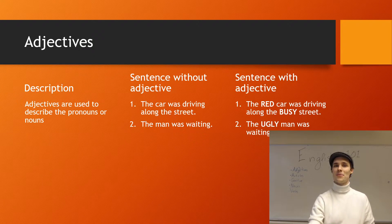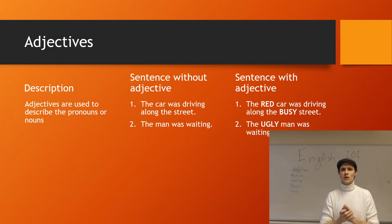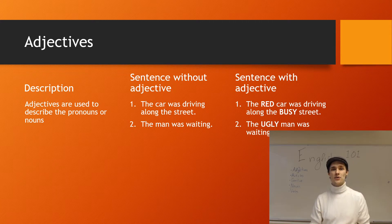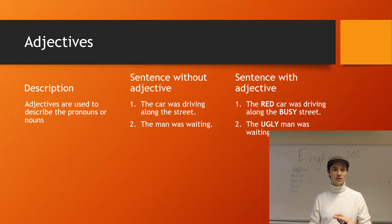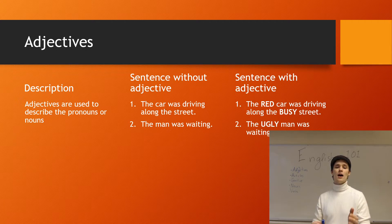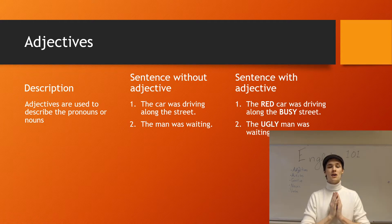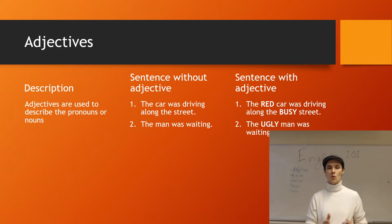Adjectives and adverbs. If we start with adjectives, they are basically used to describe the pronouns or the nouns — and we'll get to that in another episode about nouns. Looking at the examples, as you can see in the middle right here, you have a sentence without adjectives. The first one is: 'The car was driving along the street.' No adjective here.